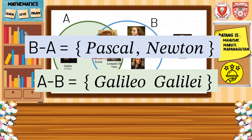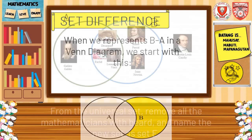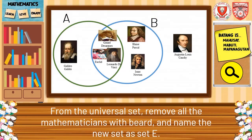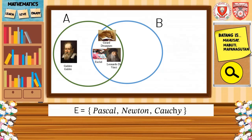This means that A minus B is not equal to B minus A. When we represent B minus A in a Venn diagram, we start with this. From the universal set, remove all the mathematicians with a beard and name the new set as set E. So the set E contains the elements Pascal, Newton, and Koch.